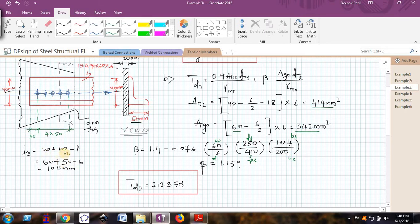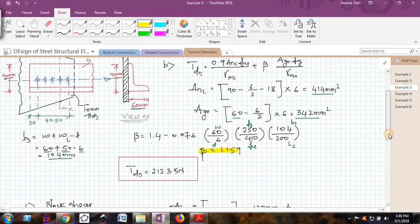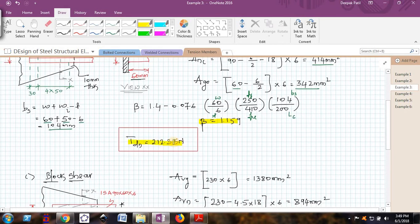This is Bs and this is LC. Bs is W plus WI minus T, so W is 60, WI is 50, and thickness of the angle is 104. I am getting Bs of 104 and LC will be same. The beta value I am getting to be 1.159. Now if I plug all those values in that equation for TDN, I am getting a TDN value of 212.3 kilo Newton.